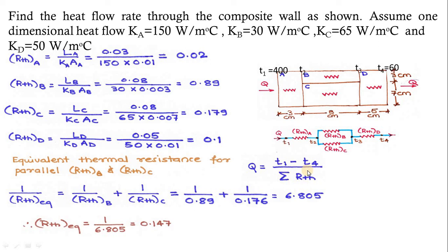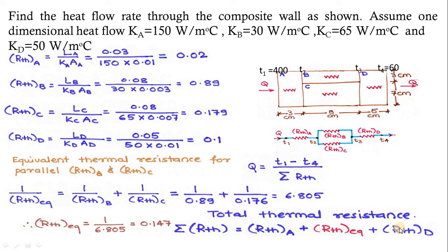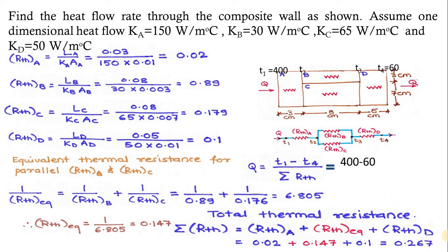At the denominator we have three terms: RTHA plus the equivalent resistance of B and C plus RTHD. The total thermal resistance calculates to 0.267. Using Q = (T1 − T4) / RTH_total = (400 − 60) / 0.267, we get Q = 1273.40. In the previous example the unit was W/m² because we calculated Q/A, but in this example it is simply Q, so the unit is Watts.